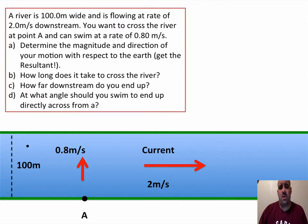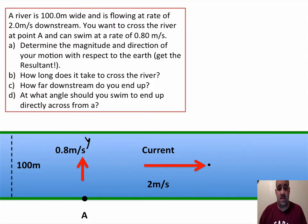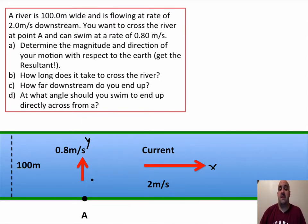If you have a river that is 100 meters wide from shore to shore, it's flowing at a rate of 2 meters per second downstream — we can represent that velocity as a vector. You want to cross the river at point A, swimming directly across at 0.8 meters per second. We'll call the crossing direction Y, the downstream direction X, with positive X to the right, negative X to the left, positive Y across the river, and negative Y back.